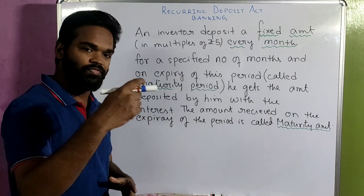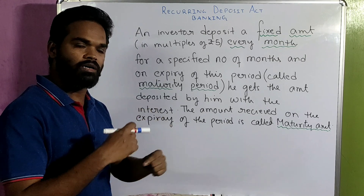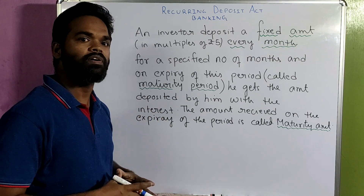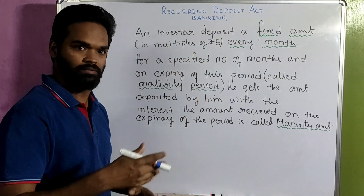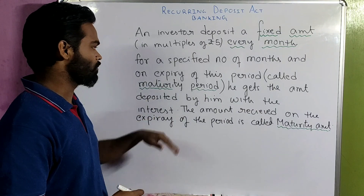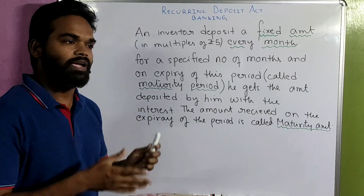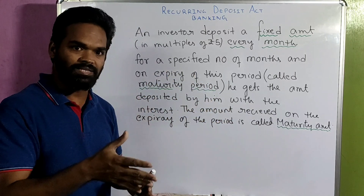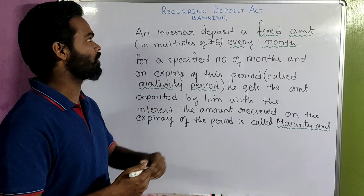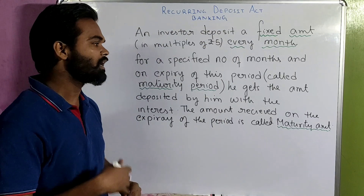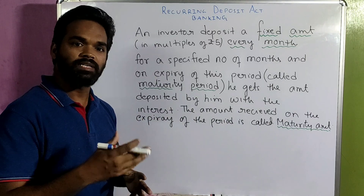First of all, what is a recurring deposit account? Recurring means it occurs after a fixed interval of time. So if an investor deposits a fixed amount every month for a certain period of time — known as the maturity period — then at the end of that maturity period he gets what he deposited plus the interest. That kind of account, opened in a bank or post office, is known as a recurring deposit account.